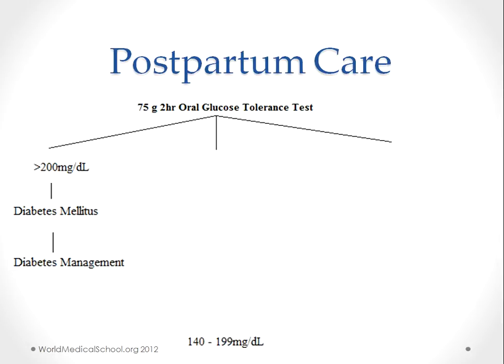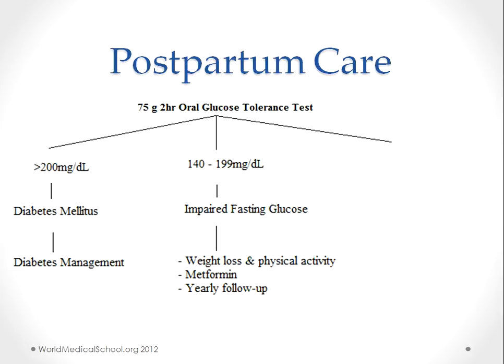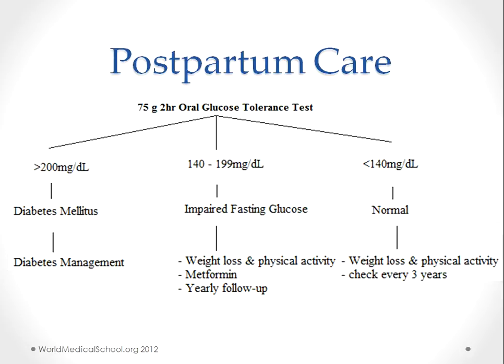If the 2-hour glucose value is between 140 and 199, that indicates impaired fasting glucose, and you need to encourage weight loss and physical activity. Metformin may also be used in combination with lifestyle modification, along with yearly follow-up. If the result is less than 140, it is normal, but you should still encourage weight loss and physical activity, with a check-up every 3 years.